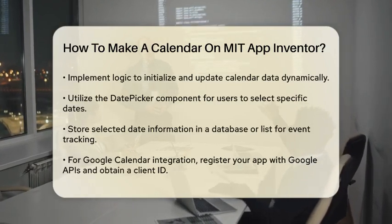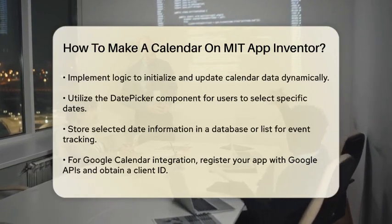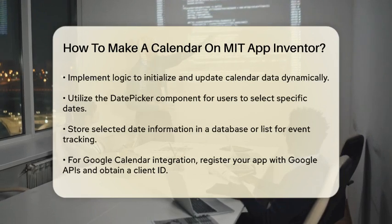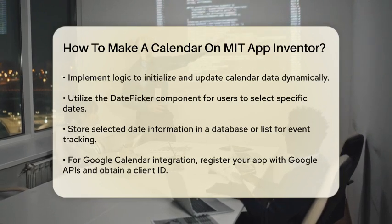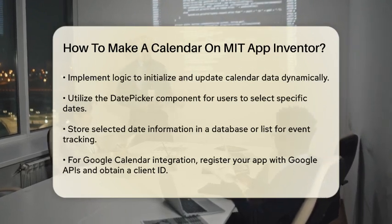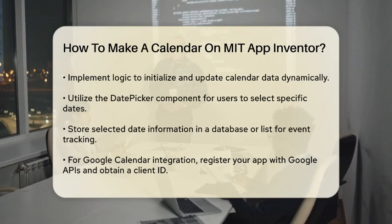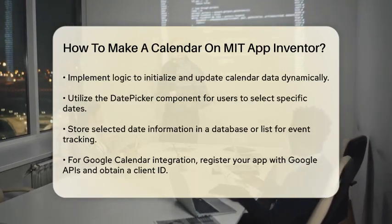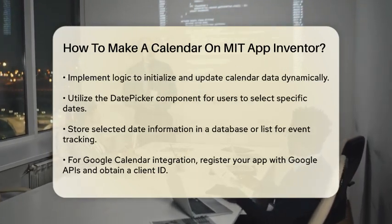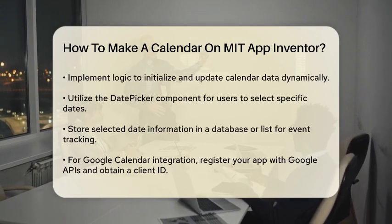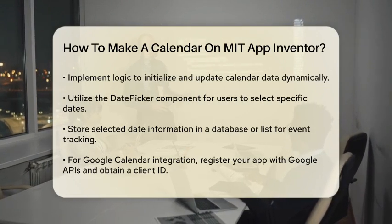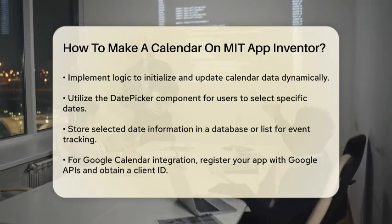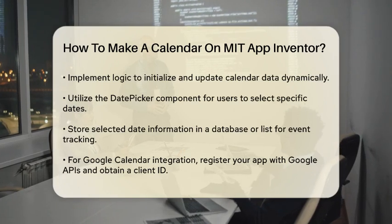Next, you'll need to handle the logic behind the calendar. This involves initializing the calendar data and updating it dynamically. You can use the date picker component to let users select dates. When a user selects a date, you can store this information in a database or a list to keep track of events or tasks associated with that date.